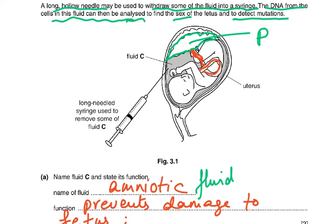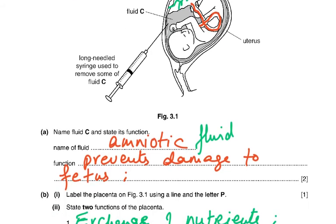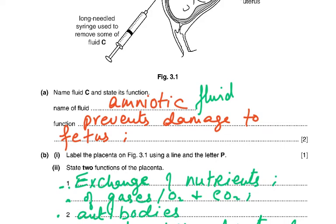Label the placenta — I've colored it green for you to understand. The umbilical cord is shown in red. The placenta is this part, and from the placenta the umbilical cord comes out, joining the placenta to the fetus. Label the placenta using the line and the letter P.